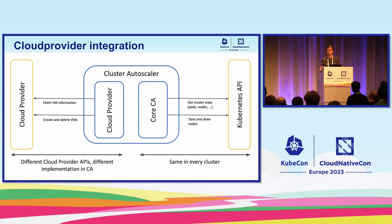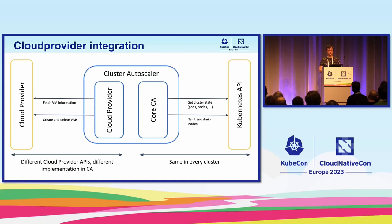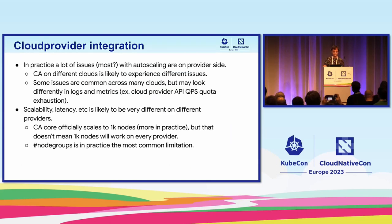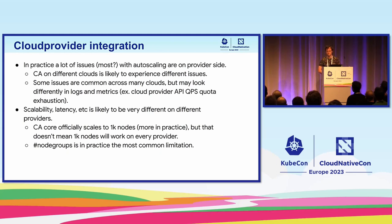While the core logic of Cluster Autoscaler and the Kubernetes APIs it talks to is consistent in every installation, the cloud provider APIs and the cloud provider module in Cluster Autoscaler are going to be different. The cloud provider is actually a very significant part of Autoscaler logic. In practice, a lot of issues are going to look at least slightly differently in different clouds, and there may be issues specific to certain clouds that won't show up elsewhere.